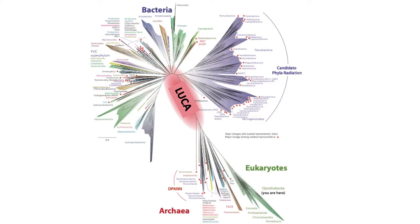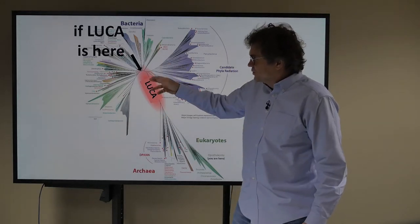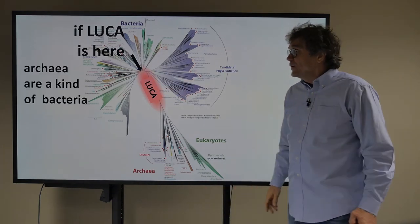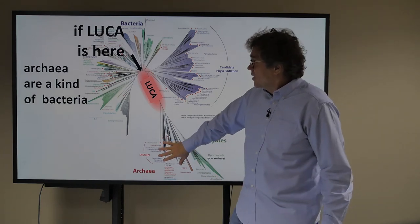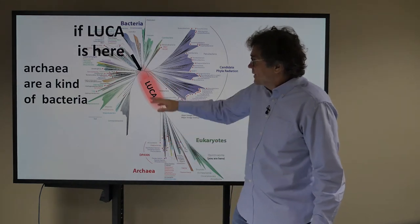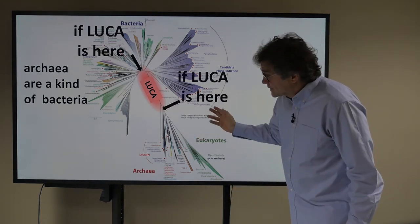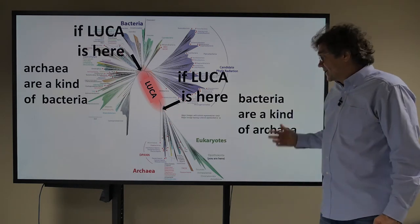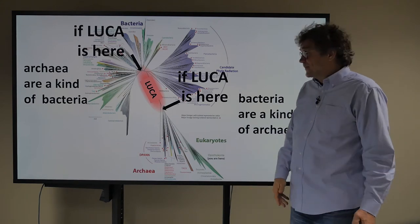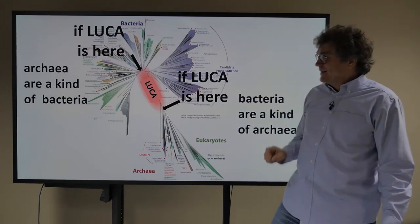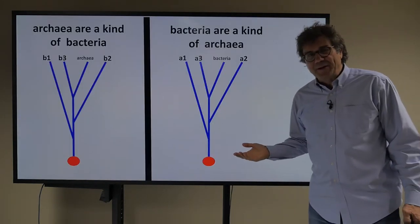So here's this nice new phylogenetic tree. And notice that the LUCA diagram, the LUCA region is very large here. And if LUCA is here, embedded in the bacteria, then we can say that the Archaea, which are down here, are a type of bacteria. Why? Because they're embedded in the bacteria. But maybe LUCA is right here. In other words, LUCA is in the Archaea. And if that's the case, then we can say that bacteria are a kind of Archaea. We can say that all of this bacteria is a kind of Archaea. Why? Because it's embedded inside the Archaea.